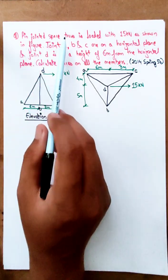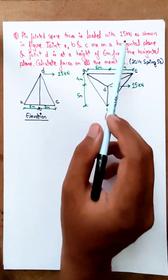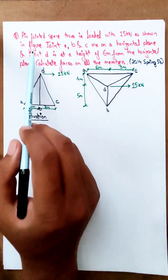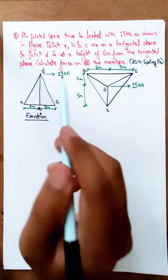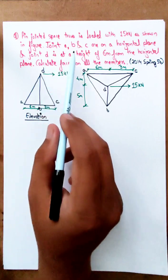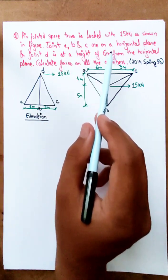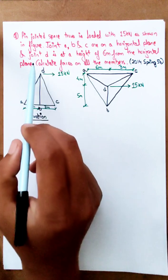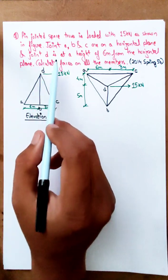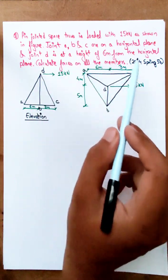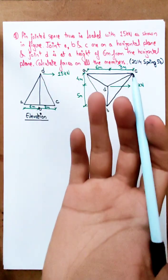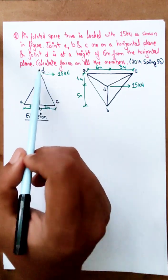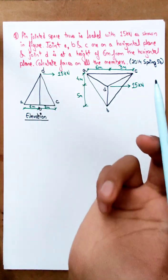A jointed Space Truss is loaded with a 15 kN force, as shown in the figure. Joints A, B, and C are on a horizontal plane. Joint D is at a height of 6 meters from the horizontal plane, as shown in the figure. Calculate the forces on all the members.